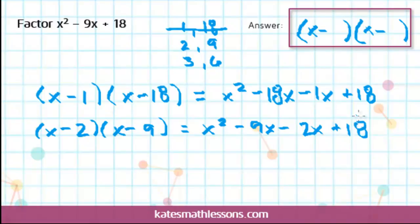Once again, I get a positive 18 at the end, which is good. But these two middle terms would combine to negative 11x, which is not what I wanted. So that means 2 and 9 is not the answer.